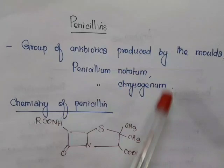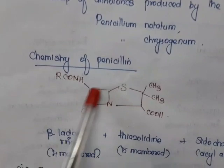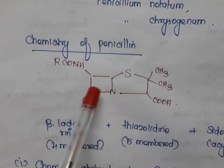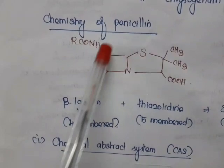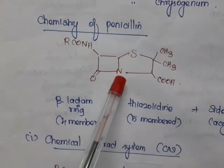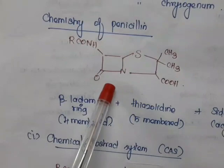Now we'll see the chemistry of penicillin. The structure of penicillin contains two rings. One ring is called the beta-lactam ring. It is called beta-lactam because, according to the carbonyl, alpha is this position and beta is the next — the beta-carbon is attached with nitrogen with respect to that carbonyl. Lactam means a cyclic amide; a four-membered cyclic amide is called a lactam.